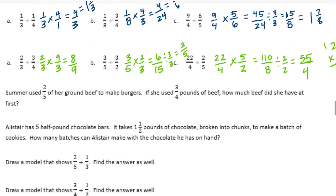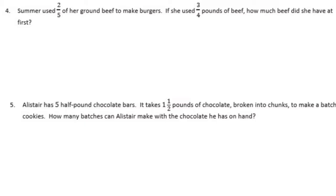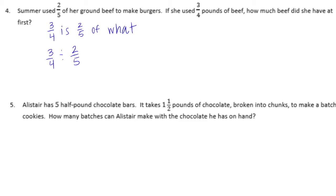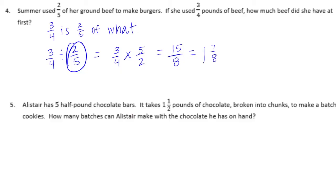You can make that a mixed number if you want to. Now let's go to number 4. Summer used 2 fifths of her ground beef to make burgers. If she used 3 fourths pounds of beef, how much beef did she have at first? So 3 fourths is 2 fifths of what? We're going to have 3 fourths divided by 2 fifths. Using invert and multiply, that becomes 3 fourths times 5 halves, which equals 15 eighths, or 1 and 7 eighths. So she had 1 and 7 eighths pounds at first.